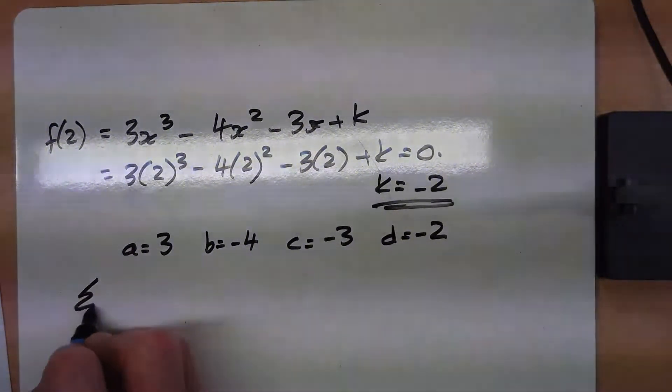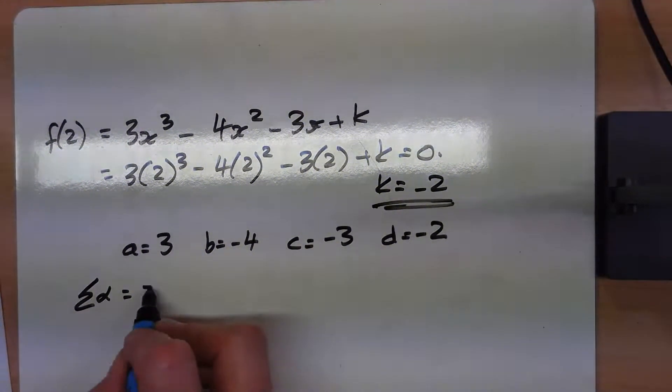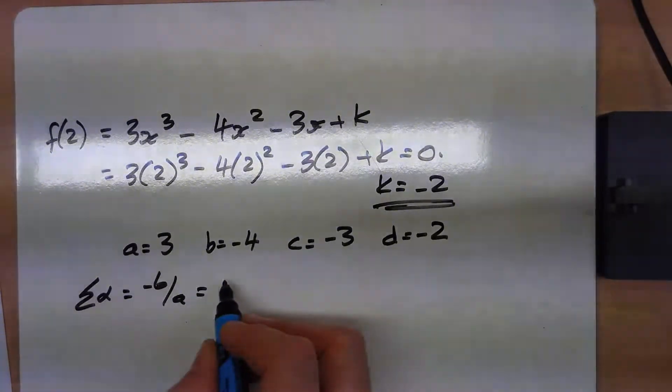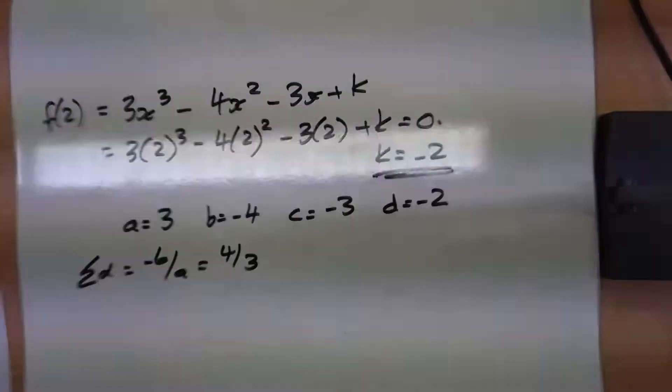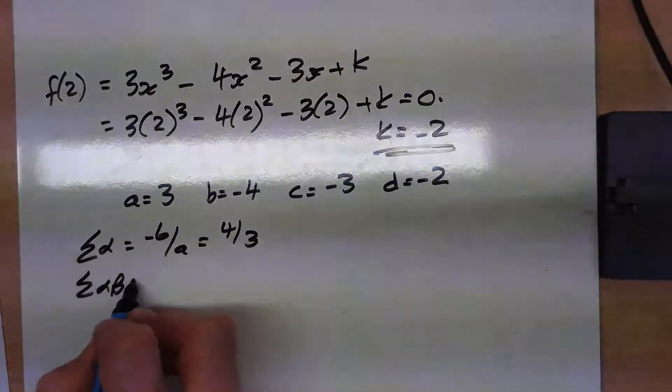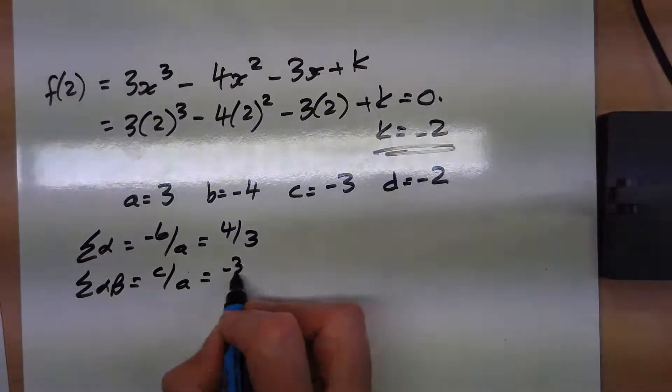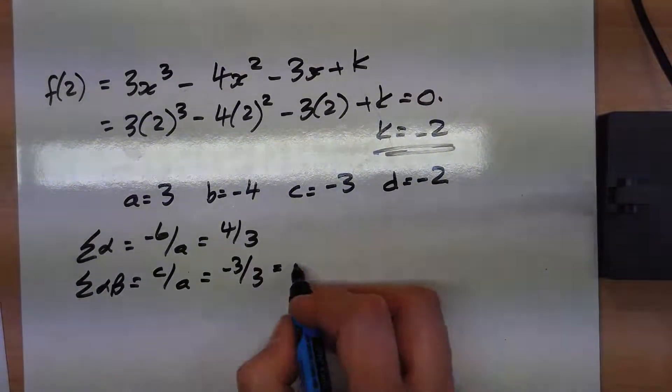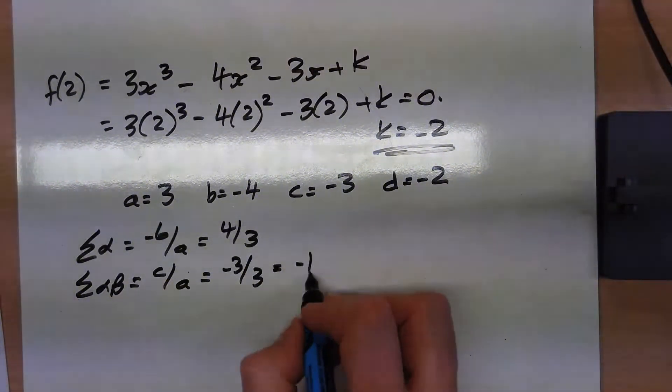And it says, find out the sum of the roots. The sum of the roots was minus b over a, so we've got 4 thirds. Then it asks for the pairs of the roots. The pairs of the roots is c over a, minus 3 over 3, so that's just minus 1.